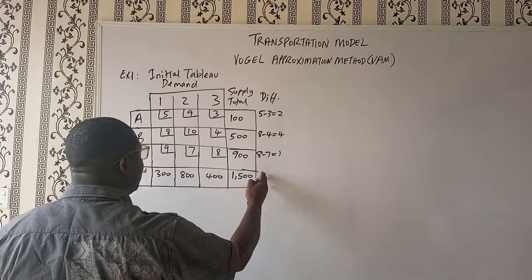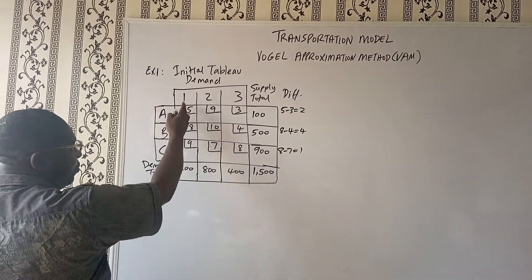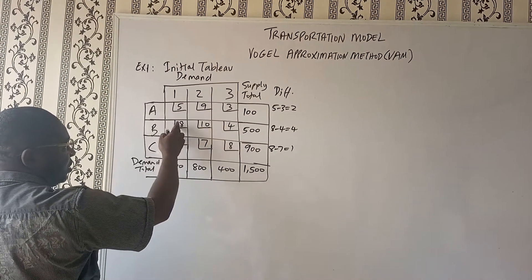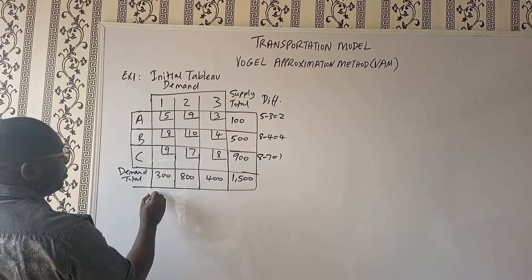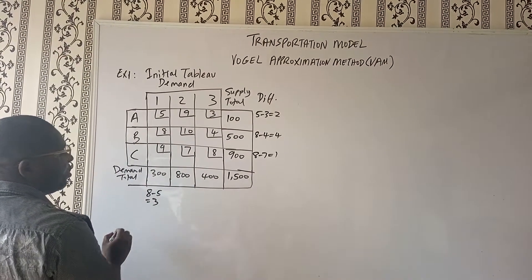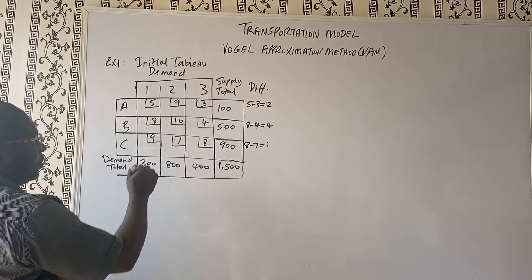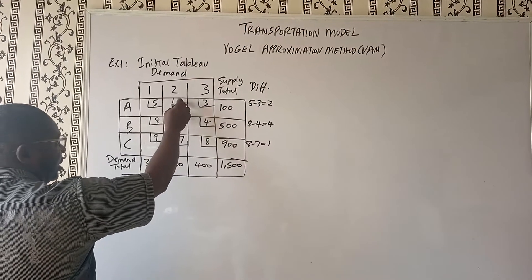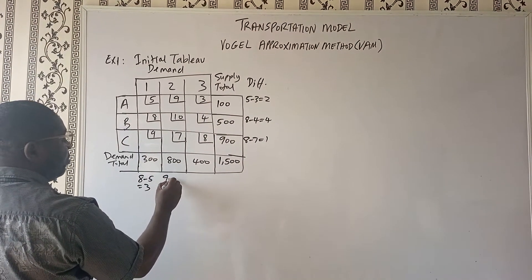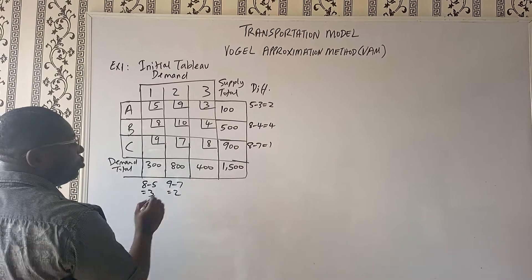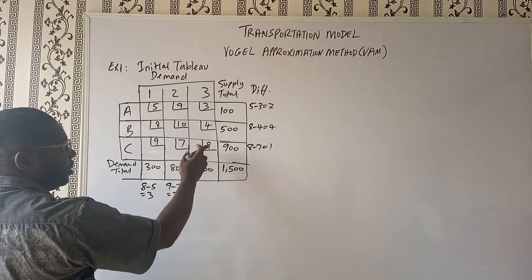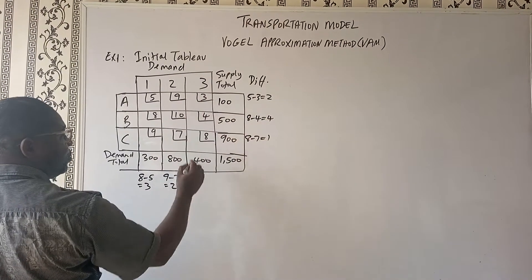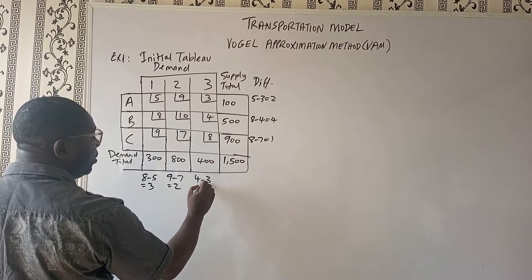We've done this for the rows. Let's do this for the columns. In this column, the least cost is five and the next least cost is eight, so eight minus five gives us three. For this column, the least cost is seven and the next is nine, so nine minus seven gives us two. For this column, the least cost is three and the next is four, so four minus three gives us one.